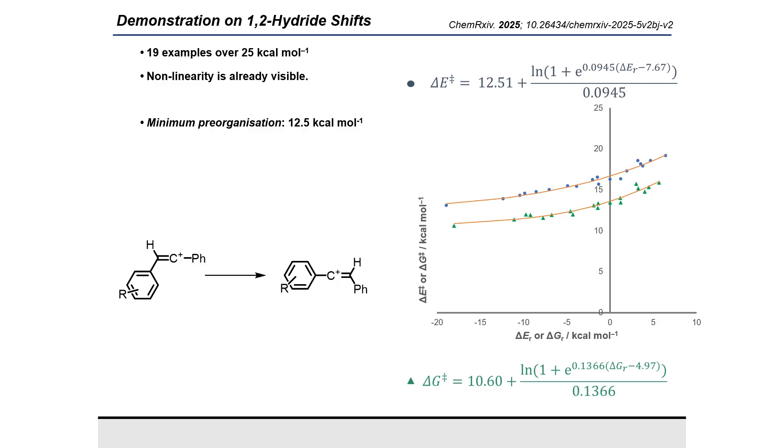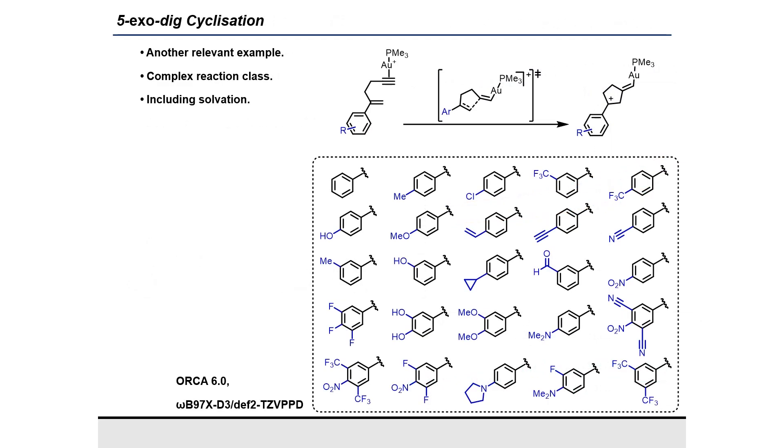For the potential energy, E_min, the minimum pre-organization, was found to be 12.5 kcal per mole, with E_EQ, the asymmetry, being 7.7 kcal per mole, and theta having a value of just under 0.1 moles per kcal.